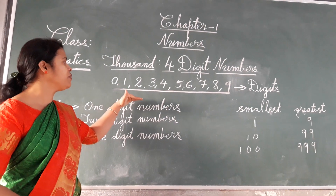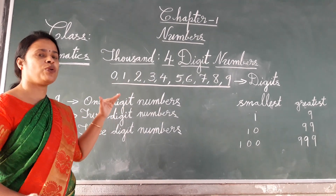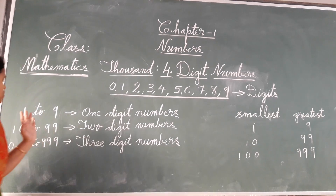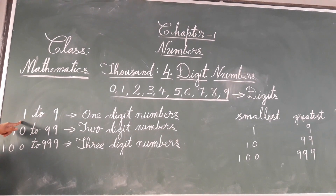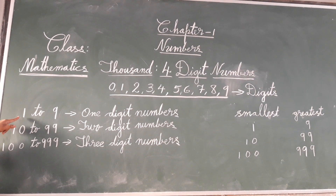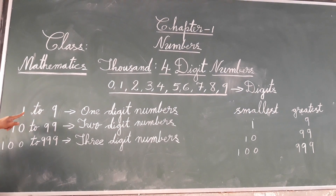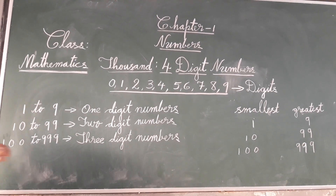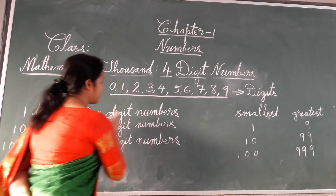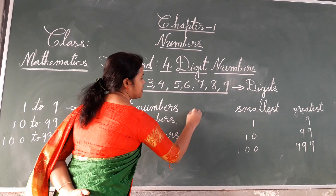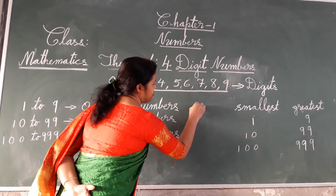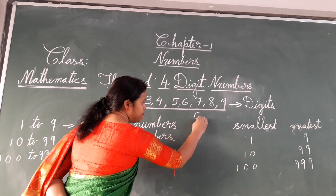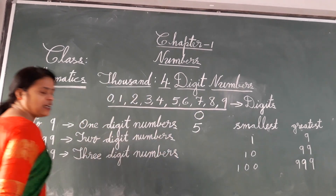Every number we frame is made out of these digits. In class 1 we studied one digit numbers. A one digit number begins from 1 and ends with 9. For example, the number 5 is called a one digit number because it has only one place — that is, ones place.